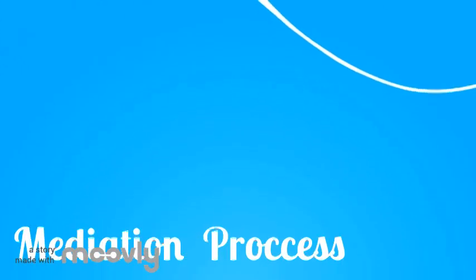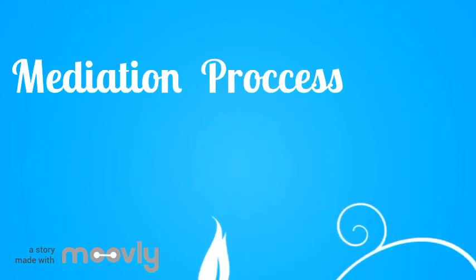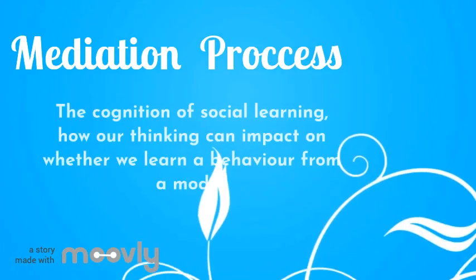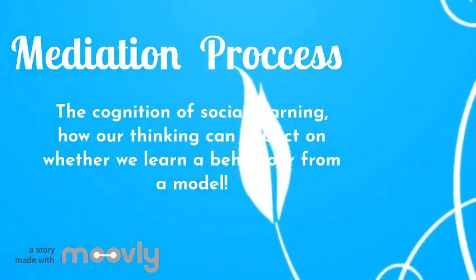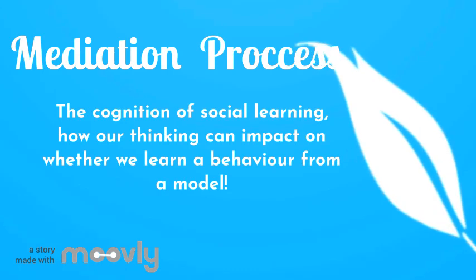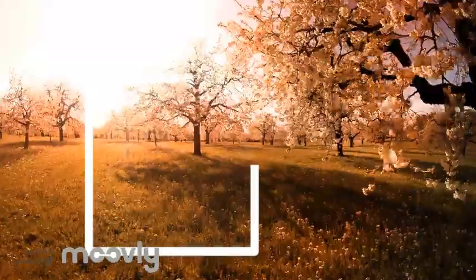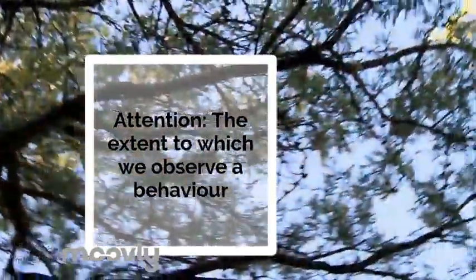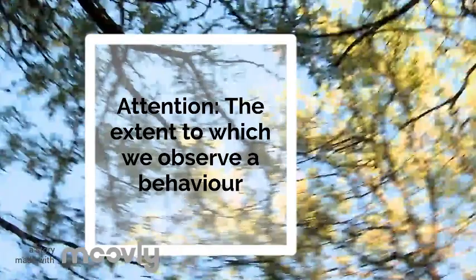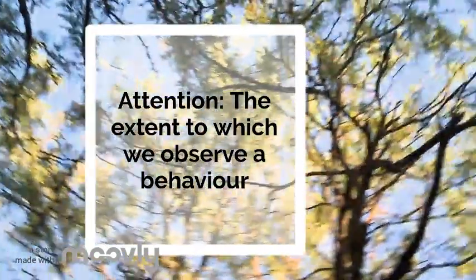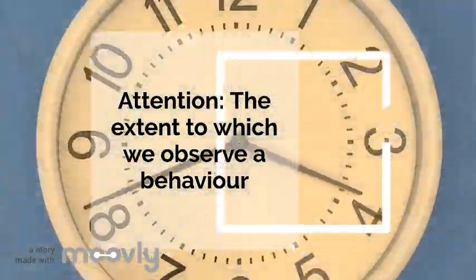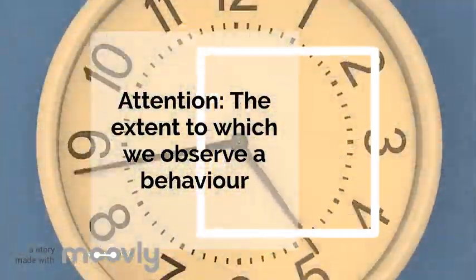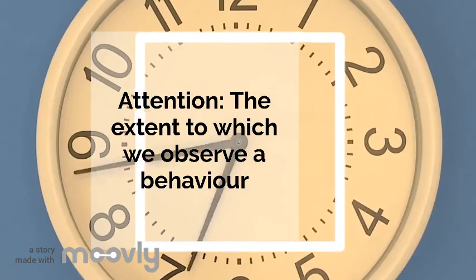The mediation process refers to the cognition of social learning — how our thinking can impact whether we learn a behaviour from a model. There are four factors behind this process. The first is attention: the extent to which we actually observe the behaviour. The more attention we pay, the more likely we are to reproduce that behaviour.